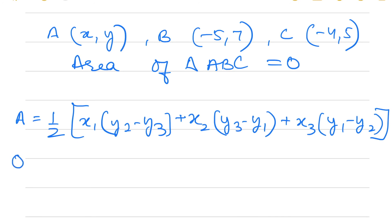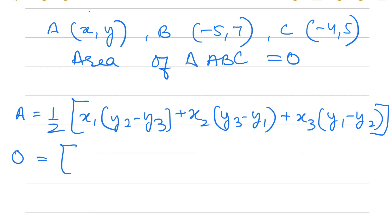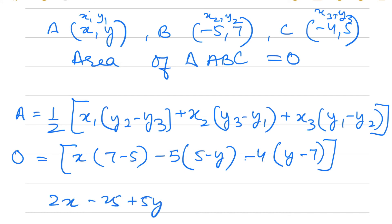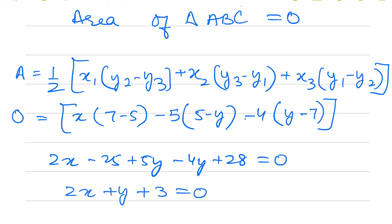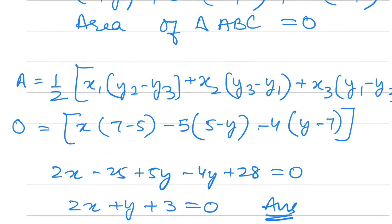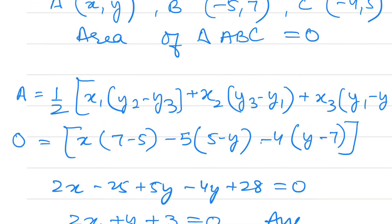Substituting coordinates A as (x1,y1), B as (x2,y2), C as (x3,y3): x(7−5) + (−5)(5−y) + (−4)(y−7) = 0, giving 2x − 25 + 5y − 4y + 28 = 0, so 2x + y + 3 = 0. That's the answer. We have finished Section B and will do the next section in the next video.